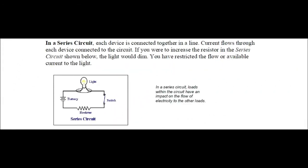In a series circuit, each device is connected together in a line. Current flows through each device connected to the circuit. If you were to increase the resistor in the series circuit shown below, the light would dim. You have restricted the flow of available current to the light.